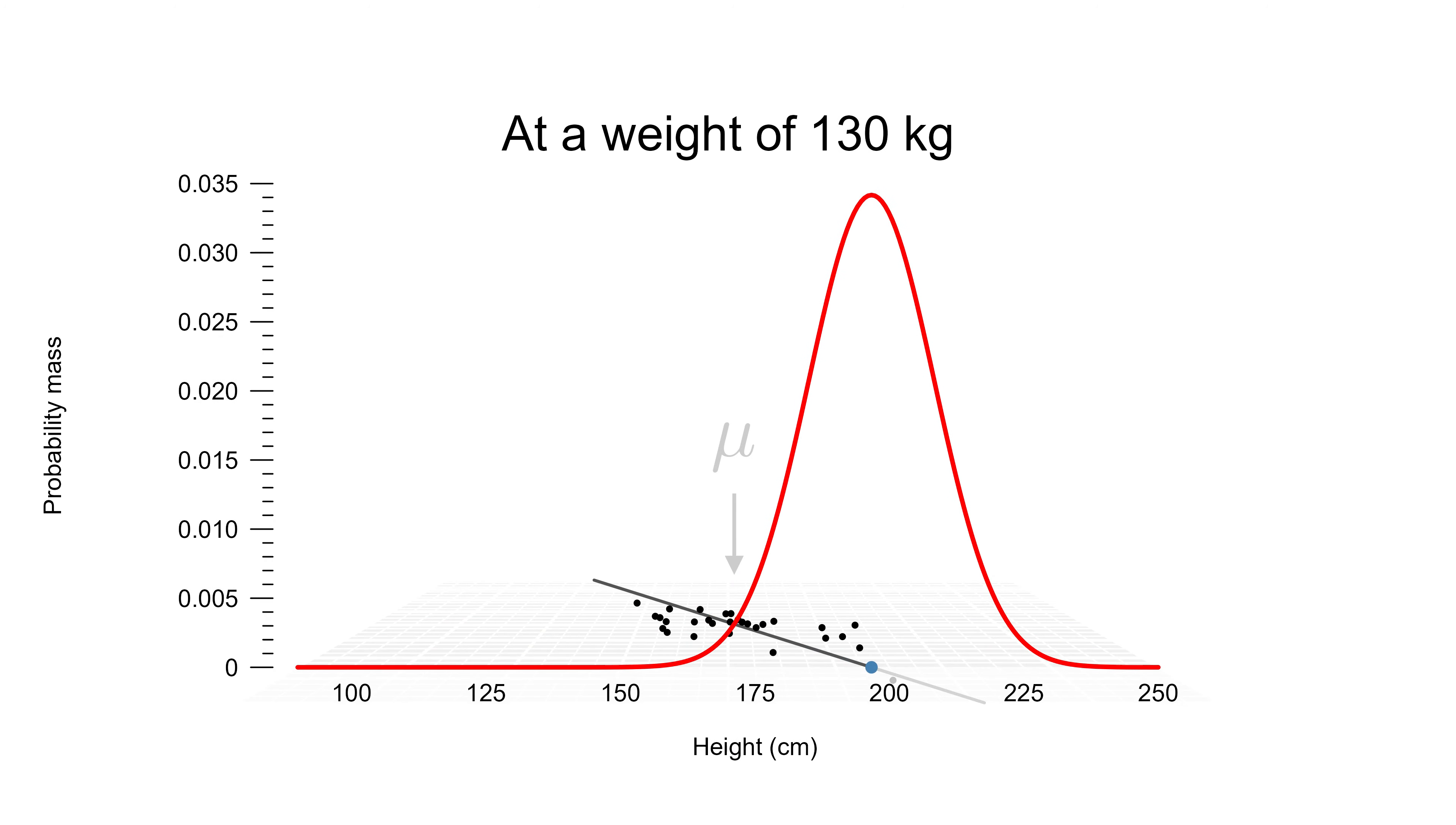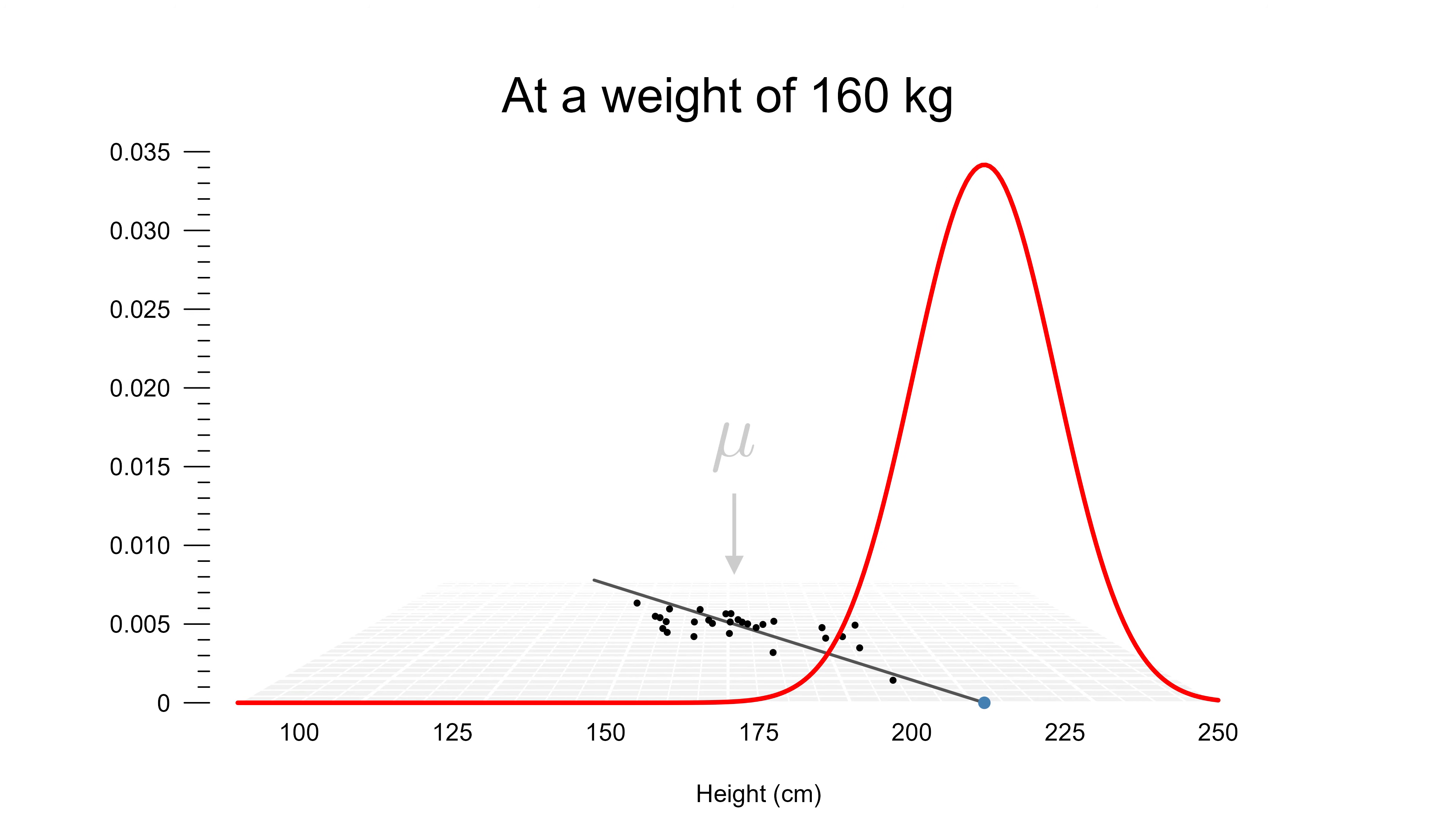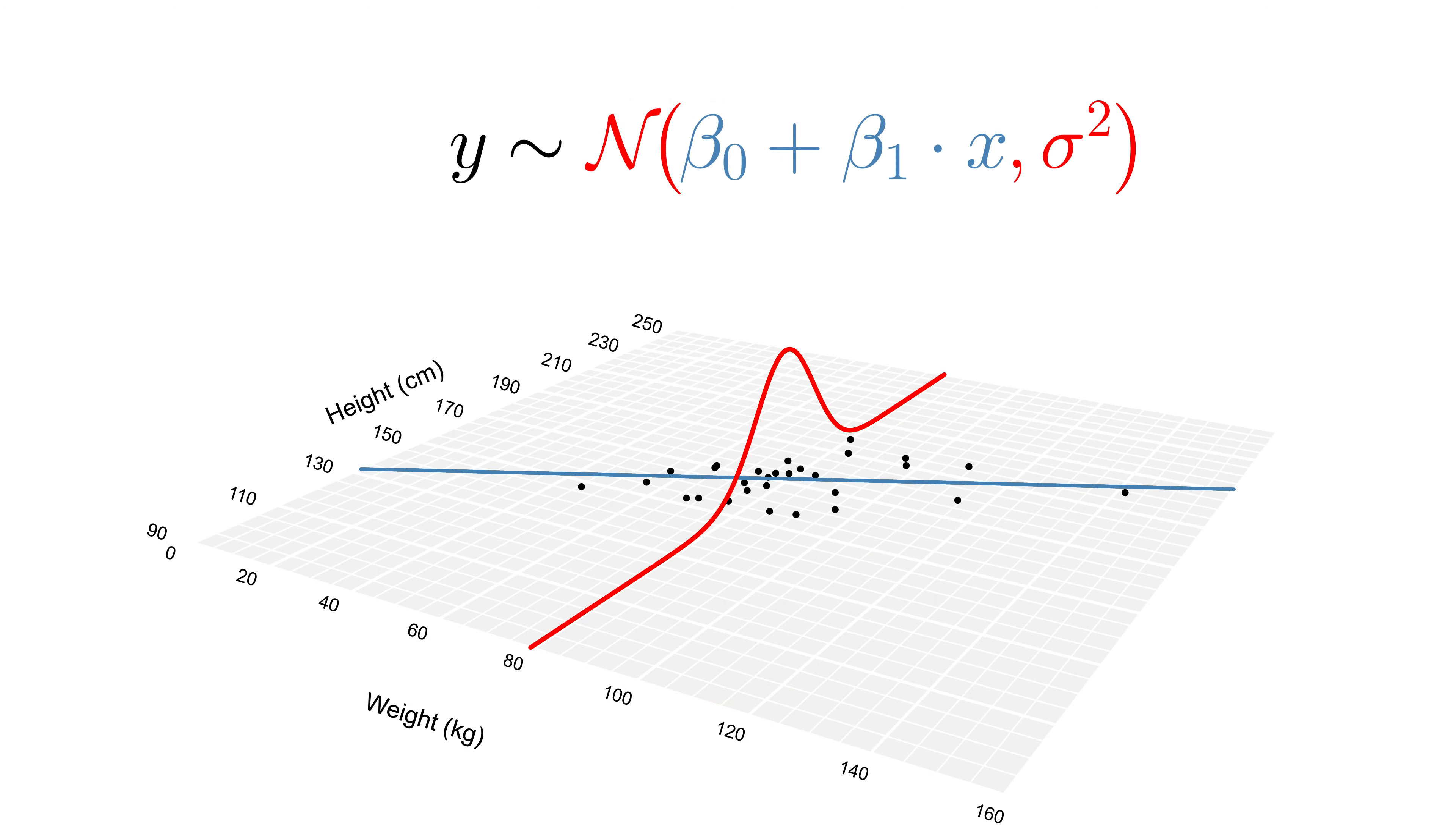Move to a different value of the explanatory variable, and we predict a normal distribution with a different mean. This way of interpreting things is called conditional normality.